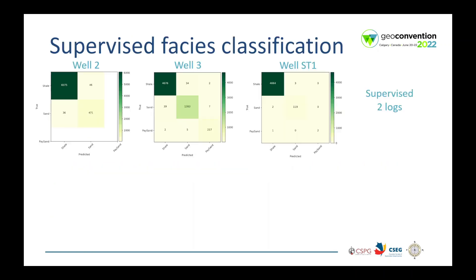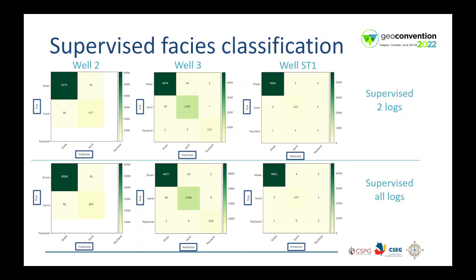Now the results. Here we have the confusion matrices for well 2, well 3 and well ST1. The true facies are the rows on the vertical axis and the predicted facies are in the columns on the horizontal axis. Well 2 has no paste sand and it was not misclassified. Well 3 has almost all paste sand classified correctly, and well ST1 has only 3 samples of paste sand and 1 was misclassified. Looking at the confusion matrices for the supervised classification using all logs, the results are like those using the petrophysical logs as inputs, with small variations but overall the same — no paste sand misclassified in well 2 and most of the facies correctly classified in well 3 and ST1.